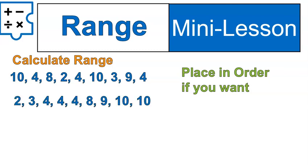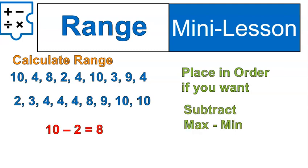I put it in order. So I know that 2 is my minimum value and 10 is my maximum value. So when I subtract 10 minus 2 to get 8, it's just quick and easy. I know I've done it right.